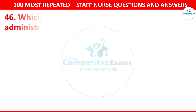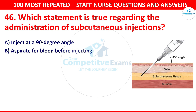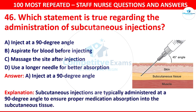Question number 46: Which statement is true regarding the administration of a subcutaneous injection? Options are inject at 90-degree angle, aspirate for blood before injecting, massage the site after injection, or use a longer needle for better absorption. The correct answer is inject at a 90-degree angle. Subcutaneous injections are typically administered at a 90-degree angle to ensure proper medication absorption into the subcutaneous tissue.